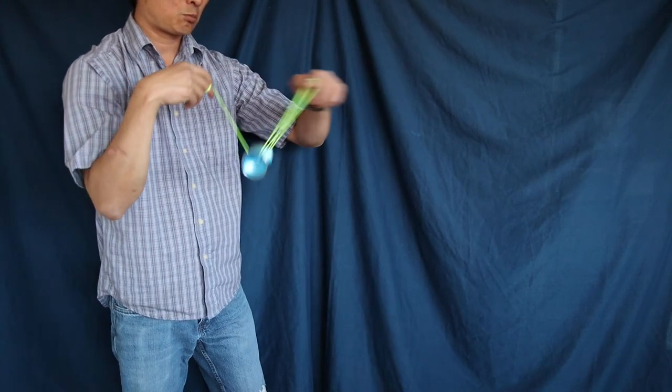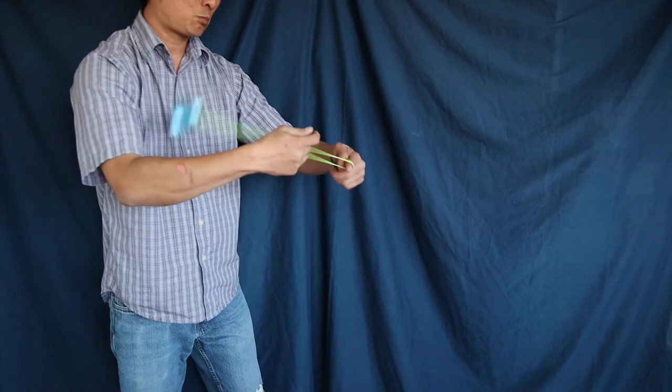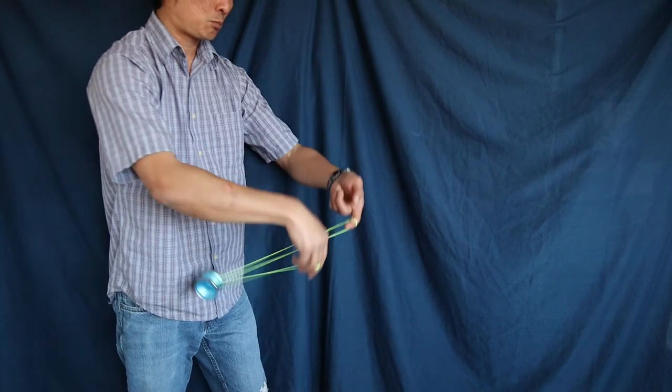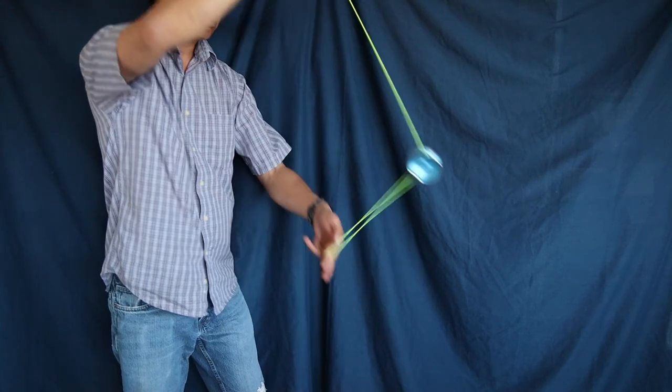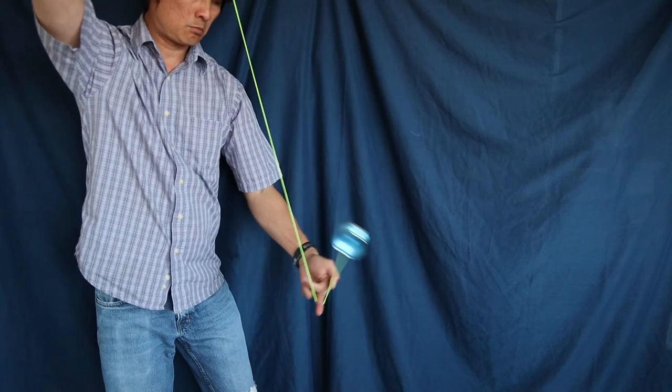And then with your non-throwing hand, you're going to intercept that motion so that it'll land on that one string that's coming from your throw hand. Dismount. And then bind.